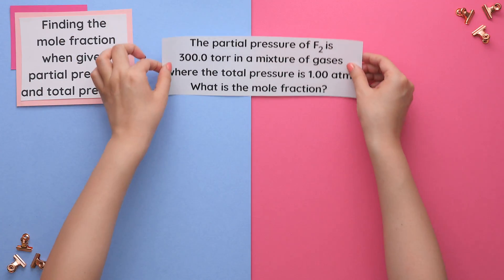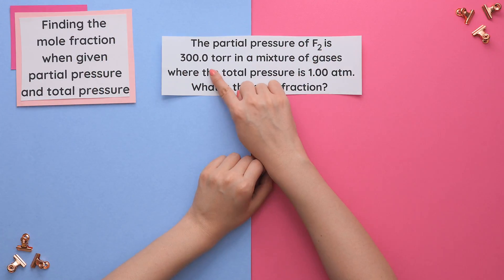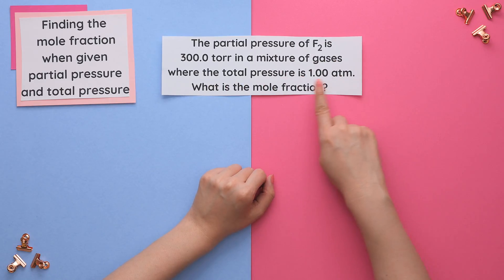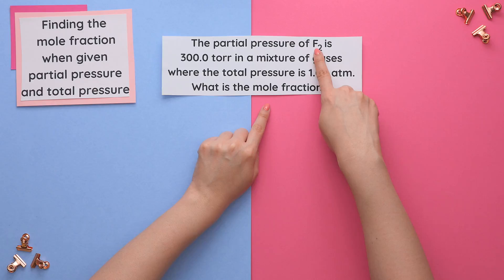Example 2: The partial pressure of F2 is 300 Torr in a mixture of gases where the total pressure is one atmosphere. What is the mole fraction of F2?